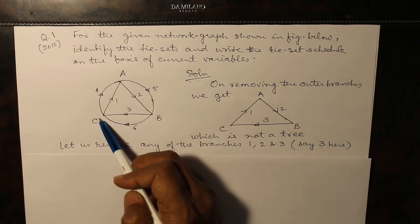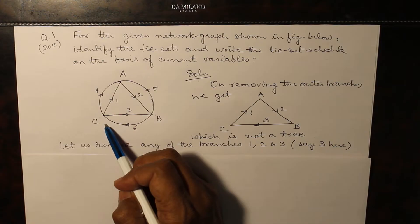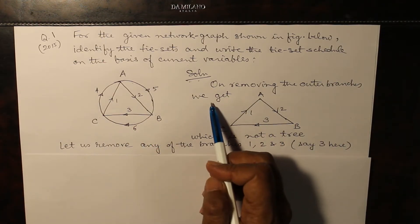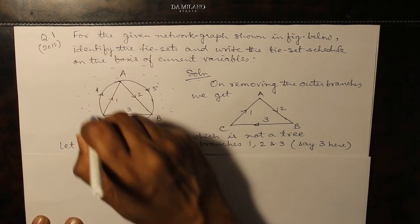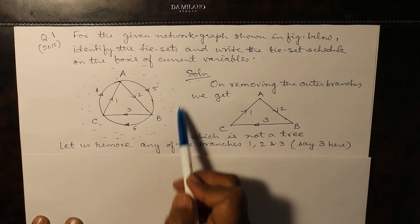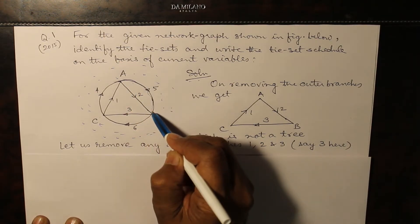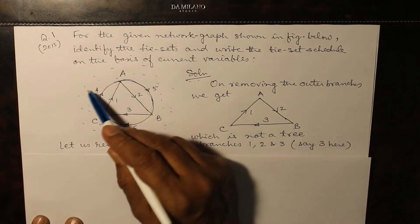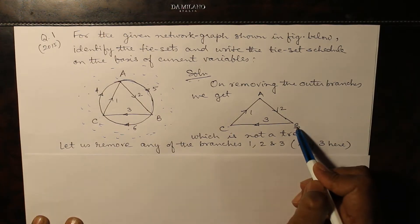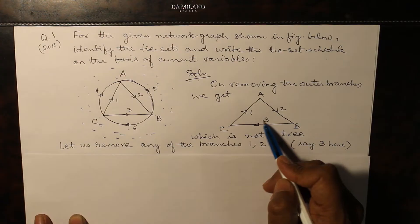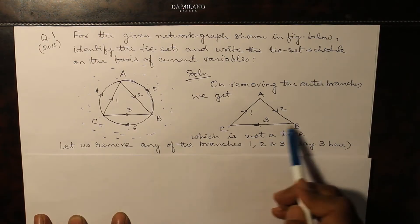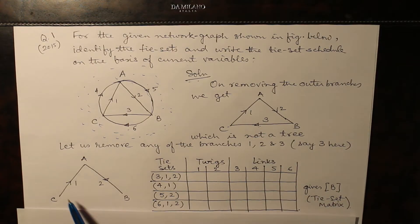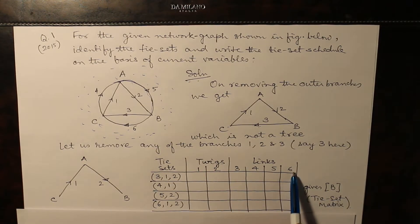Here is the graph — there are 3 nodes: A, B, and C. On removing the outer branches, like the island-in-ocean analogy, branches 4, 5, and 6 are removed. There is still a mesh present, so we remove branch 3. Now all nodes A, B, and C exist; branches 1 and 2 are the tweaks, and the rest — 3, 4, 5, and 6 — are links.